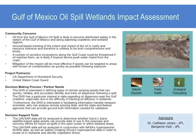Our project falls under three societal benefit areas: natural disasters, public health, and ecological forecasting. The community concern is that oil from the Gulf of Mexico spill is likely to become distributed widely in the waters of the Gulf of Mexico and along adjoining coastlines and wetland regions. A number of sensitive ecosystems along the Gulf Coast could be threatened if oil reaches them. The United States Department of Homeland Security and the United States Coast Guard are the two project partners for this research.